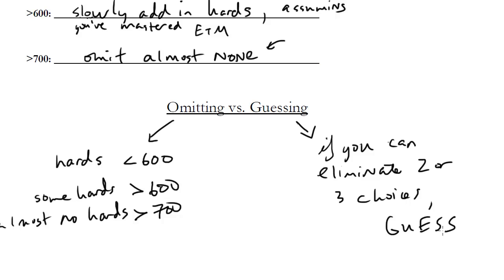So if you're down to two or three, you want to make a guess. And it just works out that the math favors that kind of move. So that's the general pacing and guessing strategy.